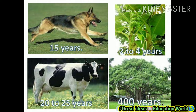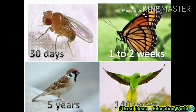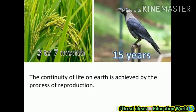More examples: a horse lives 30 years, a tortoise 100 to 150 years, and an alligator or crocodile about 60 years. A housefly lives 30 days, a butterfly 1 to 2 weeks, a sparrow 5 years, and a parrot 140 years. You can remember these. Next example: petty lives 3 to 7 months and a crow lives 15 years.